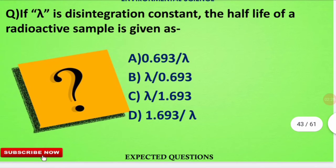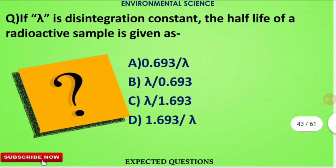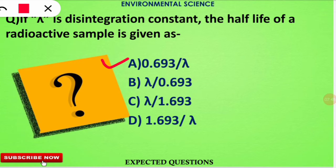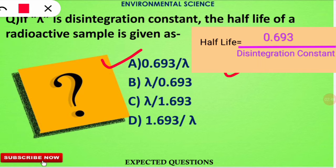The next question is related to the disintegration constant of a radioactive sample: how to calculate the half-life when the disintegration constant lambda is given? The correct option is option number A — if we divide 0.693 by the disintegration constant lambda, we get the half-life period of the radioactive sample.